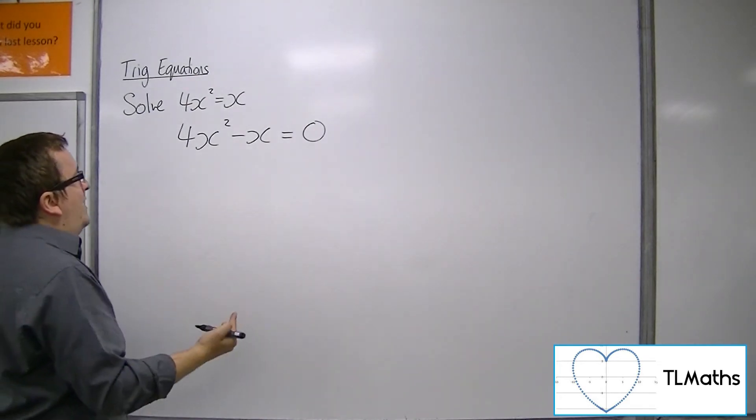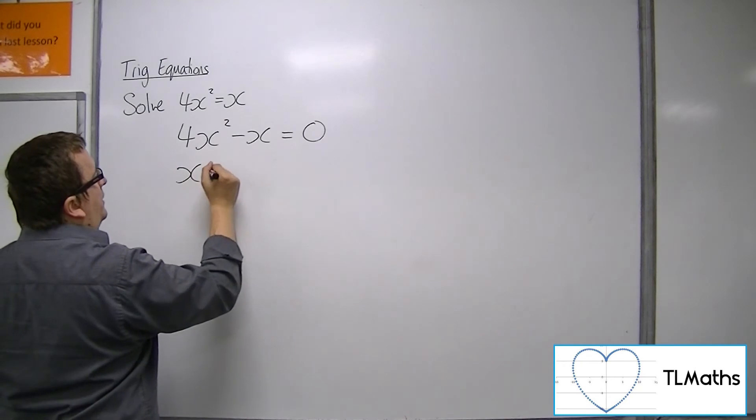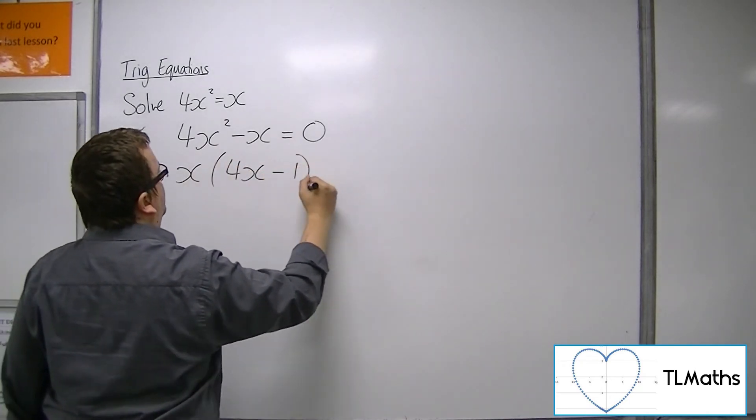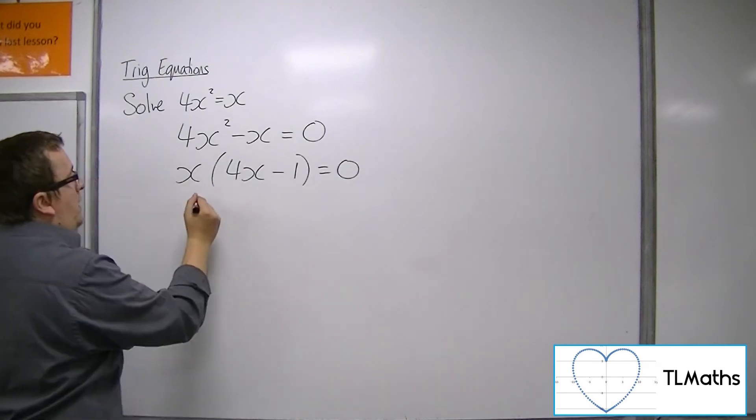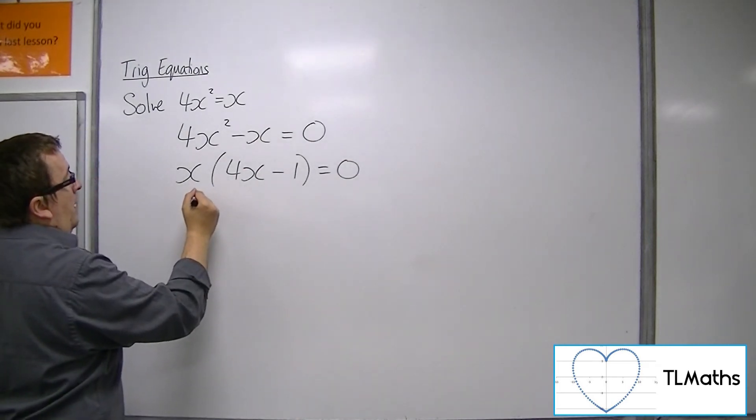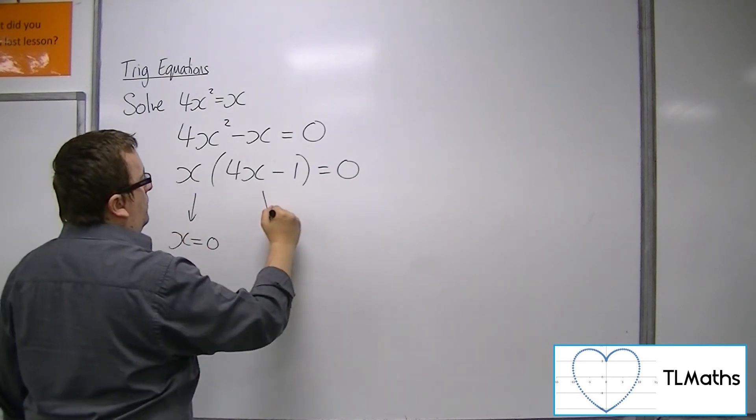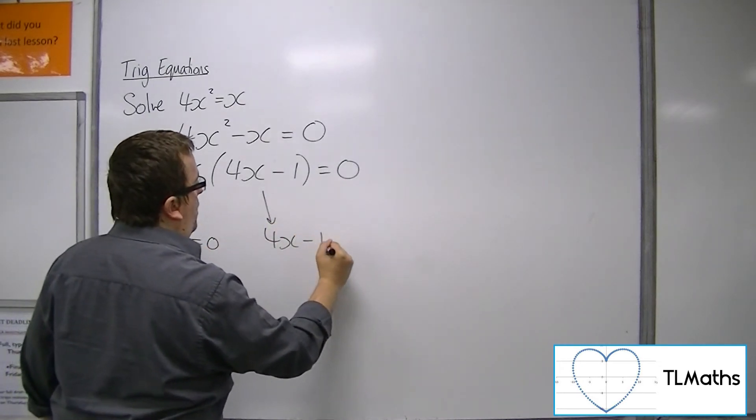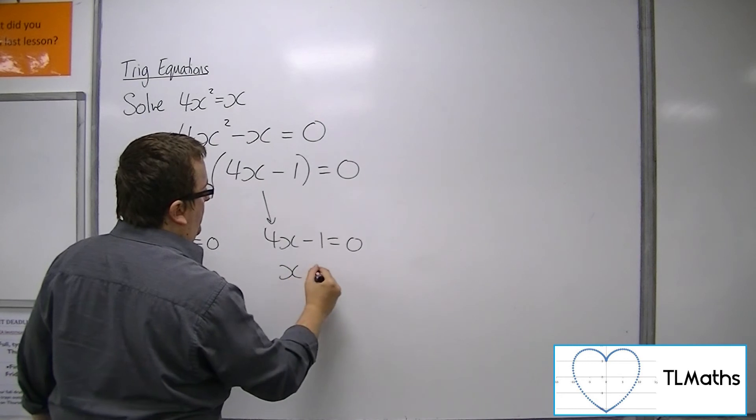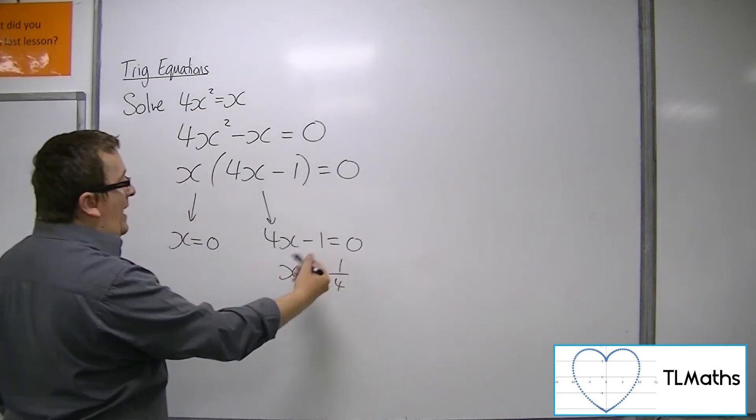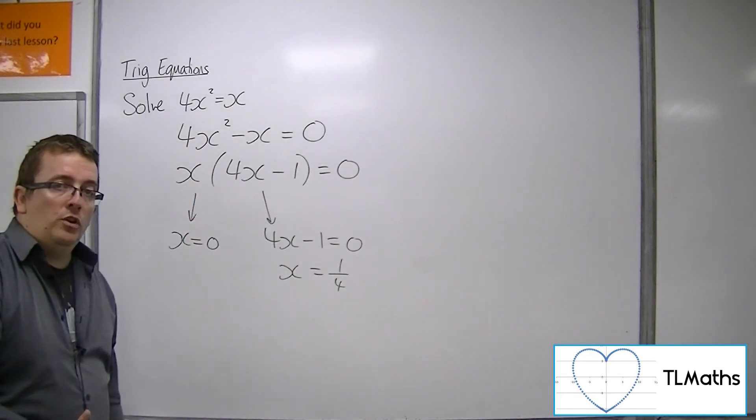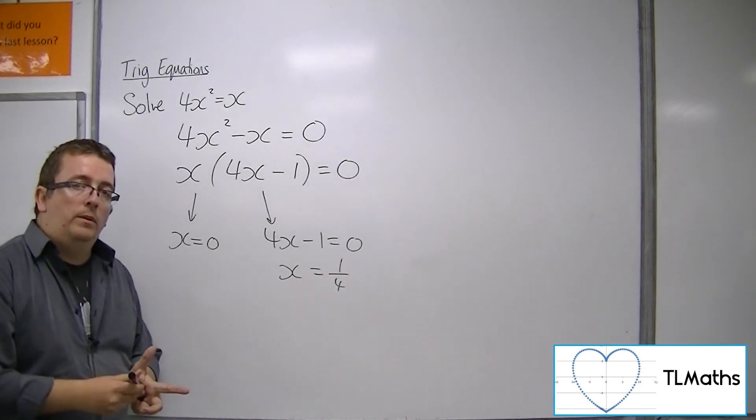Now this quadratic is solved by factorising. So you factor out the x, leaving you with two solutions. Either x is 0, or 4x minus 1 is 0, in which case x is a quarter. So x is a quarter is a solution, but it's not the only solution to this problem.